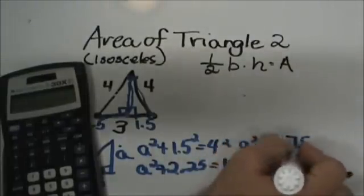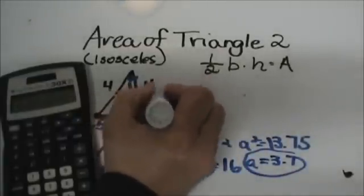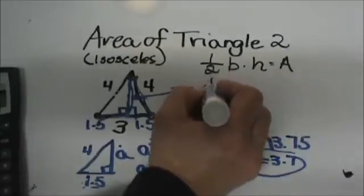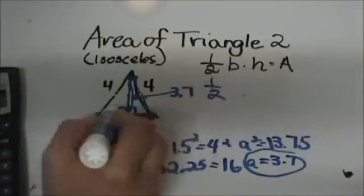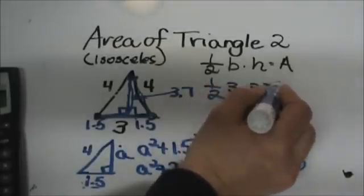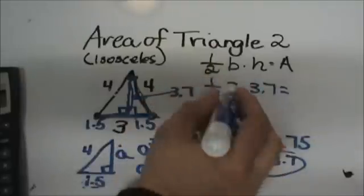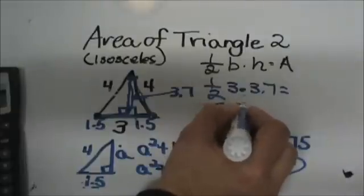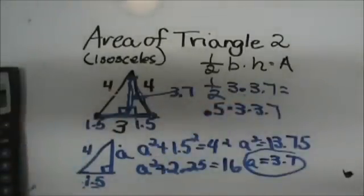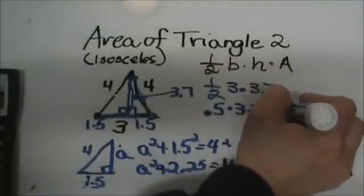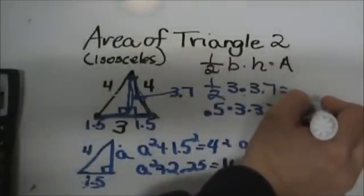So 3.7 is the height of my isosceles triangle. Now I can plug it into one half times my original base of 3 times my height of 3.7. I am going to convert one half to a decimal, so that is 0.5 times 3 times 3.7, which gives me an area of 5.55 square units.